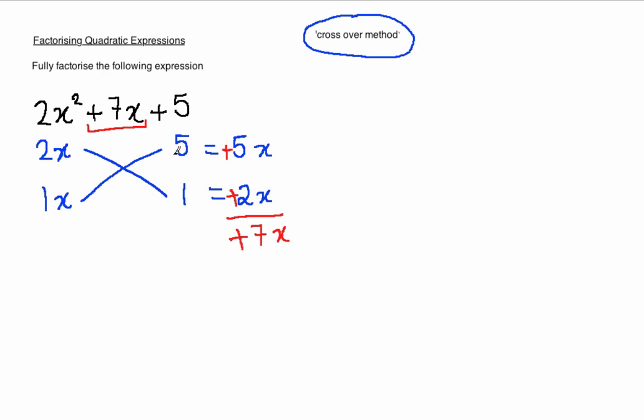Which means we can add these signs back in front of the numbers here. Now let's have a look at what we have. 2x and 1x multiplied together to give you 2x squared. So that works.